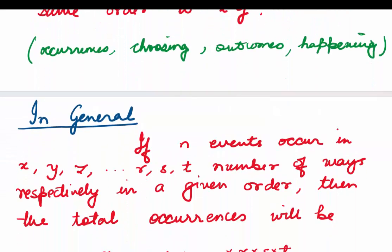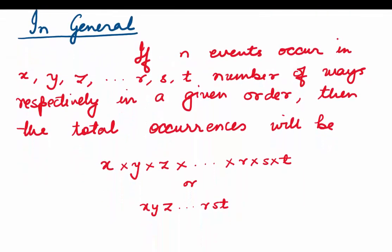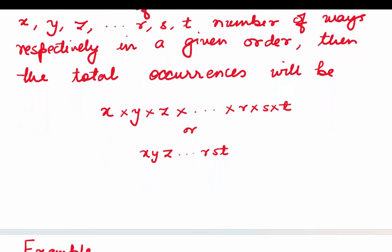We can generalize this principle. If n events occur in x, y, z, … r, s, t number of ways respectively in a given order, then the total occurrences will be x × y × z × … × r × s × t. That is, all the different numbers of ways are multiplied to get the total number of occurrences.